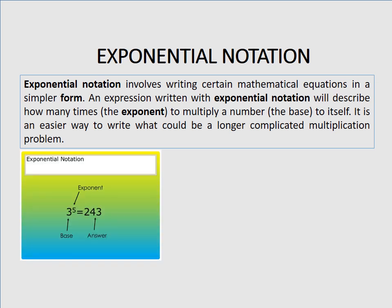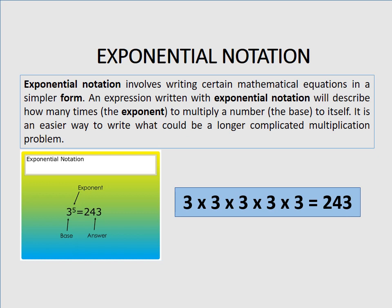For example, we have this simple equation: 3 raised to the power of 5 equals 243. Your number 3 will be the base or coefficient, and your number 5 will be the exponent. The final answer will be 243. This is how you write the solution: 3 times 3 times 3 times 3 times 3 equals 243. When writing exponential notation, you multiply the base number by itself depending on the exponent.